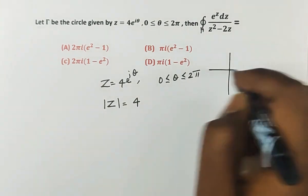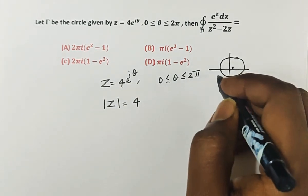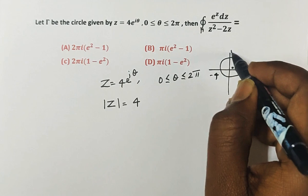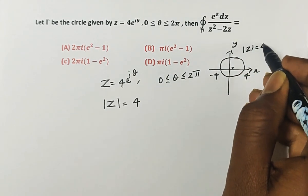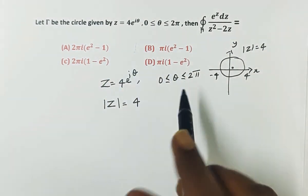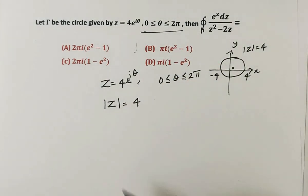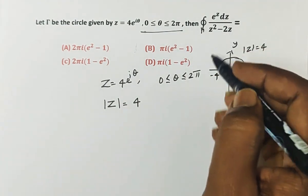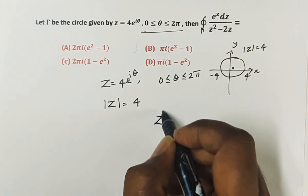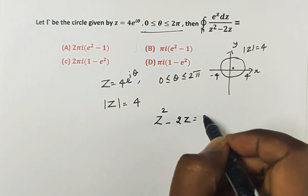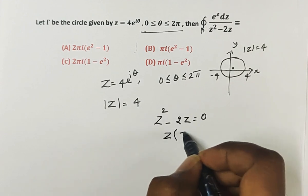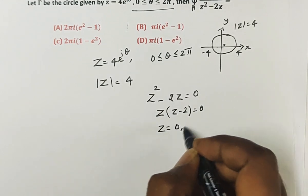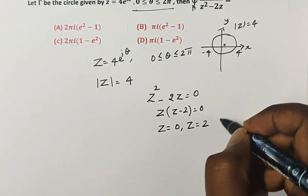We sketch the diagram with the origin, from −4 to +4. The function is e^z / (z² − 2z). To find singular points, set z² − 2z = 0, which gives z(z − 2) = 0, so z = 0 and z = 2 are the singular points.